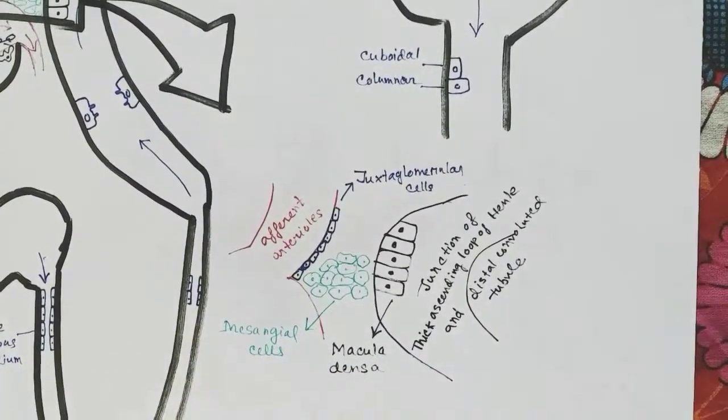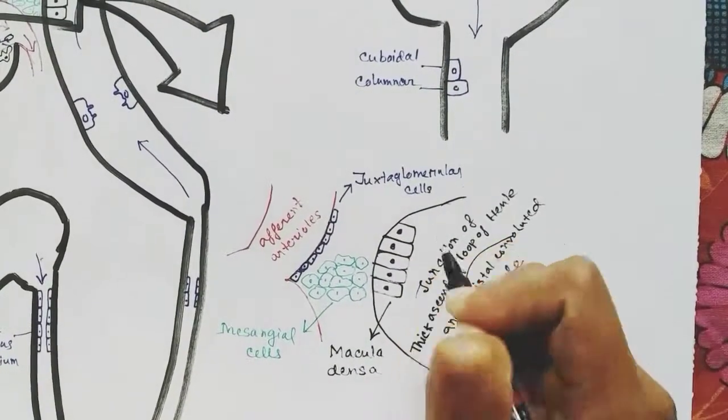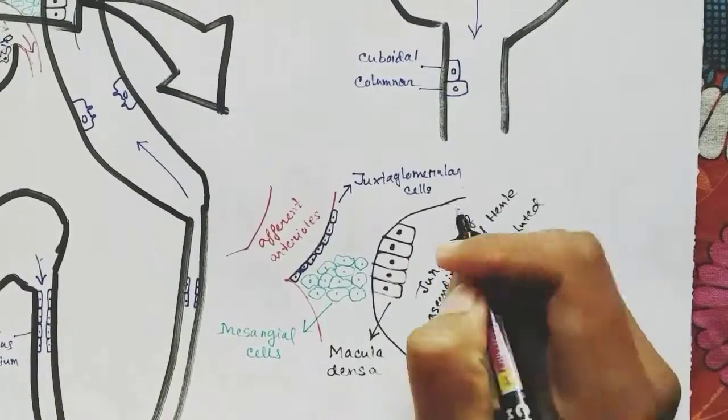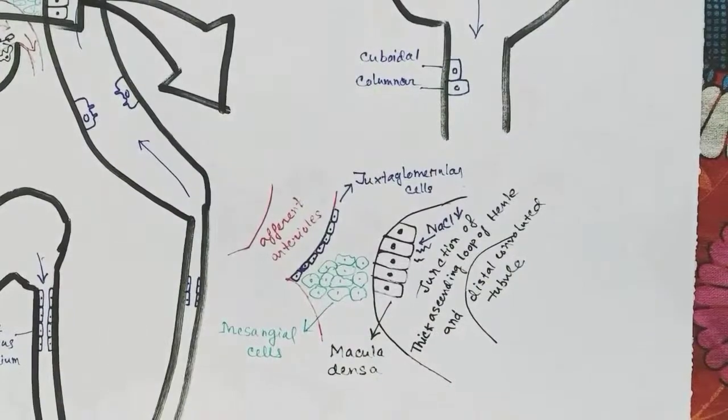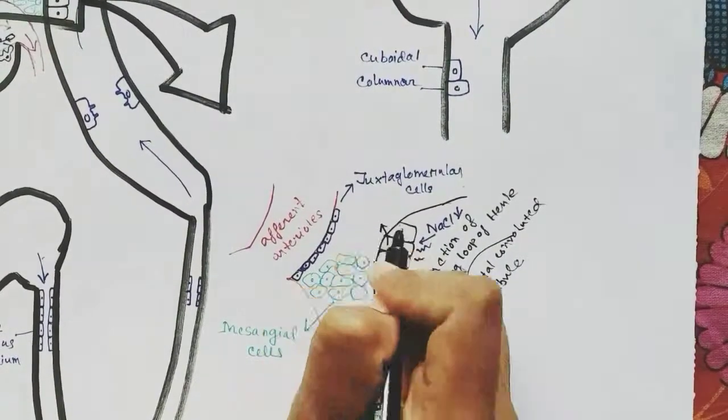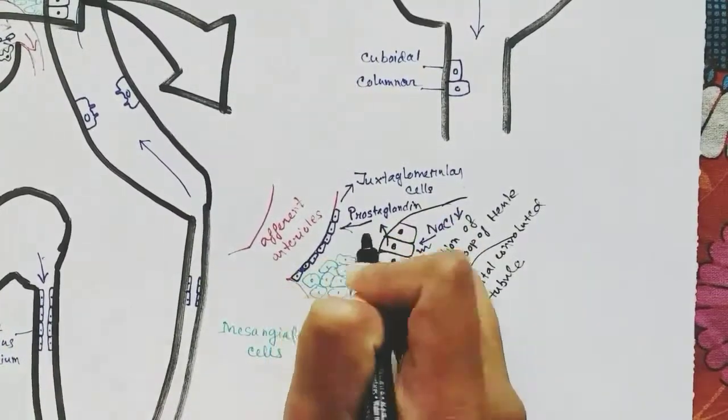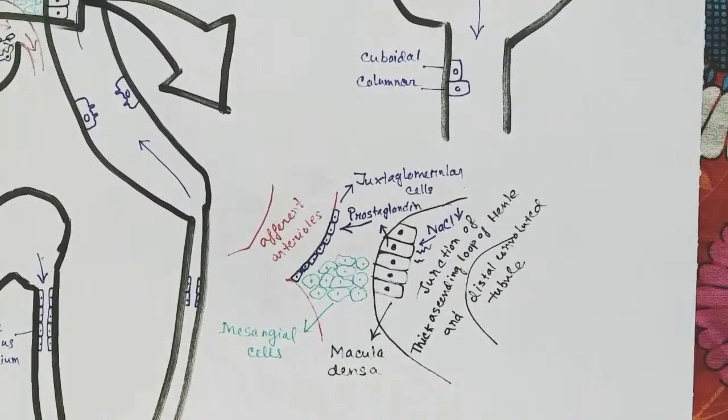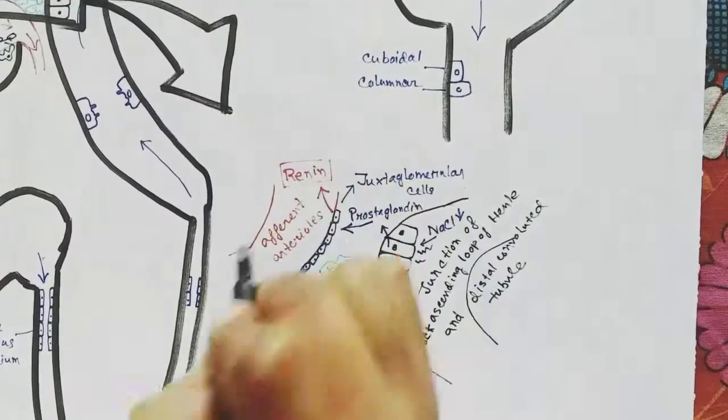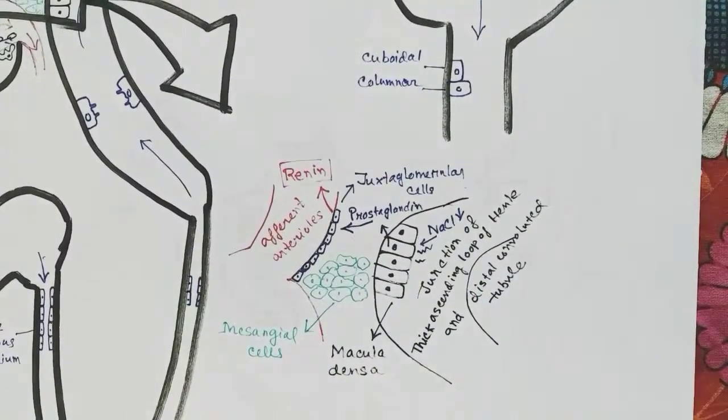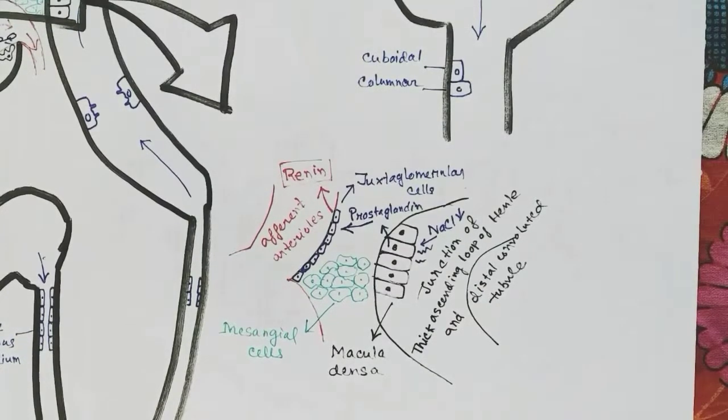The macula densa cells can sense the decrease in sodium chloride in the lumen of the nephron. When sodium chloride levels drop, they release prostaglandin which stimulates the juxtaglomerular cells to release renin. Renin is also released when baroreceptors sense decreased blood pressure.